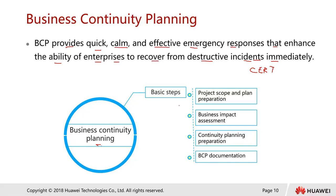The basic steps are as follows. First, we need to have a project scope and plan for the preparation. Then we need to look at the business impact assessment. You have to think about something like: if your company has 10 different critical applications used day by day, and each application gets hacked, what are the consequences and impact?